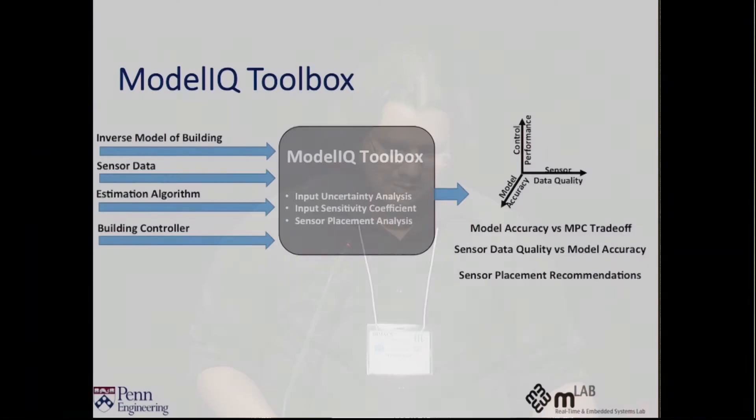And one solution is what we have come up with is called Model IQ. It's a methodology which is being made into a toolbox. And it's really simple. You start with some information about what model you want to identify and what algorithm you will use to identify it along with the data that you have. And it will spit out these trade-offs between model accuracy and control performance, uncertainty in the data, and the model accuracy itself.